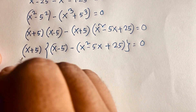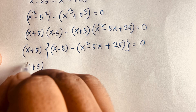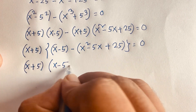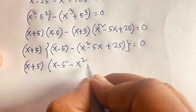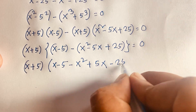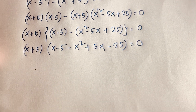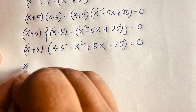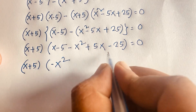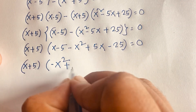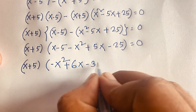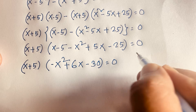Then, factoring (x+5) out completely: x plus 5 times, and looking at the remaining bracket: x minus 5 minus x squared plus 5x minus 25, combining like terms gives 5x plus x equals 6x, and 25 plus 5 gives minus 30. So we get (x+5)(−x squared plus 6x minus 30) equal to 0.